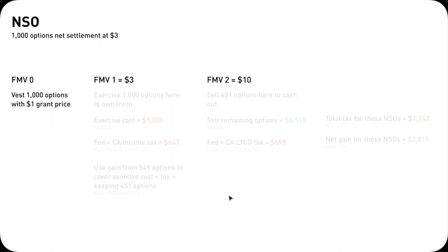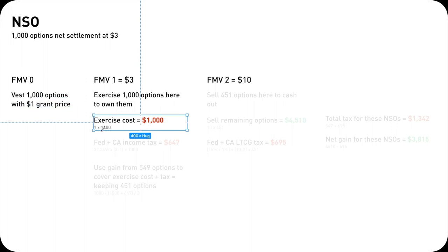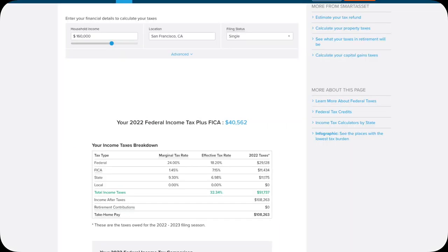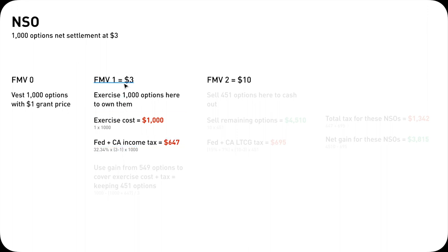Let's go to NSOs. I'm going to go over three scenarios, starting with the first one: net settlement. You're going to exercise 1,000 options at a fair market value of $3, and each option has a $1 grant price — meaning if you want to own one option, you need to pay a dollar to exercise it. It will cost $1,000 to exercise 1,000 options. The effective income tax — federal, FICA, California — is 32.34% based on the income level. The spread is $3 minus $1 times 1,000 options, giving $647 total tax to pay when you exercise.